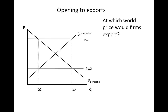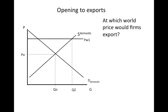So in any graph you're doing analyzing exports, be sure that the world price exceeds the price where the supply and demand curves meet. A price like PW2, which is below the autarky price, is going to be a situation where the country imports the product.